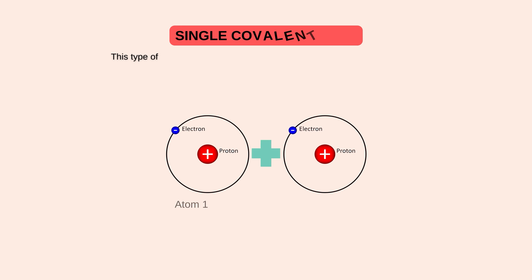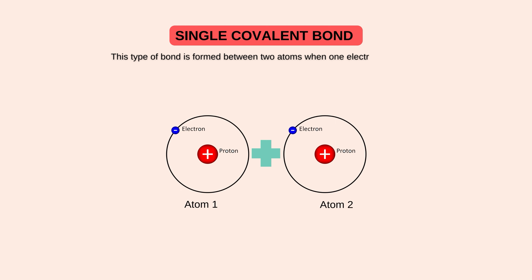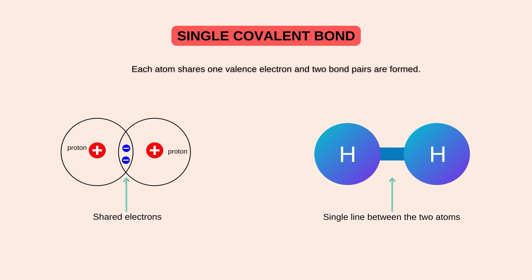Single covalent bond — this type of bond is formed between two atoms when one electron is shared by each of them and one bond pair of electrons is formed. Asan alfaz mein, single covalent bond covalent bond ki wo qisam hai, jis mein dho atoms mein se har atom ek electron ki mutual sharing karta hai aur ek bond pair wujud mein aata hai. Jaisa ke aap ko video mein nazer a raha hai, single covalent bond ko atoms ke dhermian ek single line se indicate kiya jata hai.